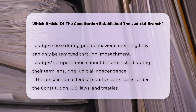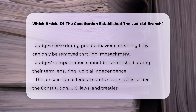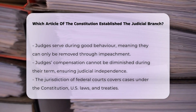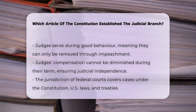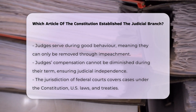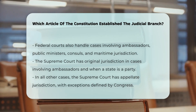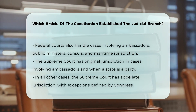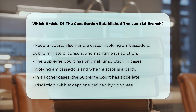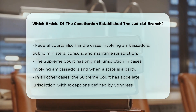The jurisdiction of the federal courts, as defined in this article, extends to cases arising under the Constitution, the laws of the United States, and treaties made under their authority. It also includes cases affecting ambassadors, public ministers, and consuls, as well as cases of admiralty and maritime jurisdiction.